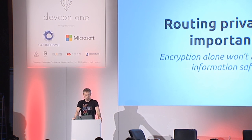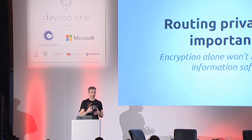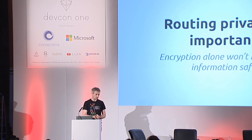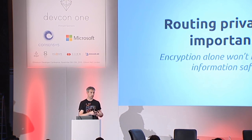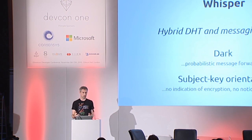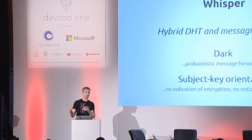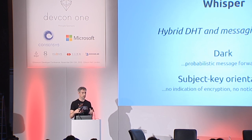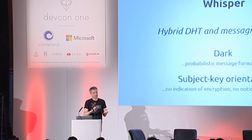In terms of privacy, it's very important to remember that the metadata of communications can often be almost as important to keep secret as the content itself. Metadata collection actually gives very useful information on what's going on. So if we want privacy, it's important to make sure that the routing itself is kept private as well as the content. Whisper is a bit of an odd thing — it's not a pure point-to-point messaging system, but it's also not a DHT. It's kind of a hybrid between the two, with probabilistic message forwarding which keeps the routing private.